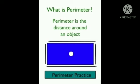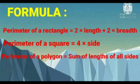In the previous lecture we have seen what is perimeter. Perimeter means the sum of the length of all the sides of a closed figure, or we have to find out the distance around an object. We also studied the formula for finding the perimeter of a rectangle, square, and polygon. Let's revise those formulas one more time.